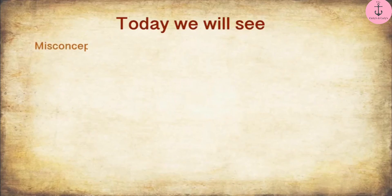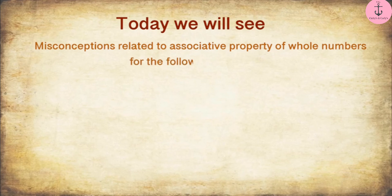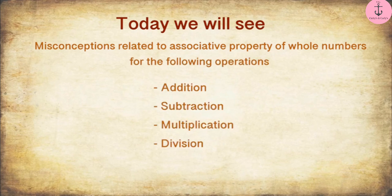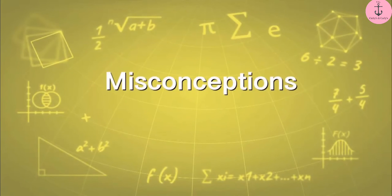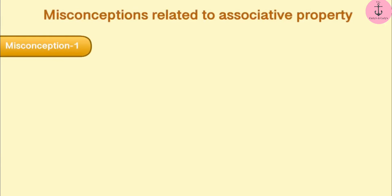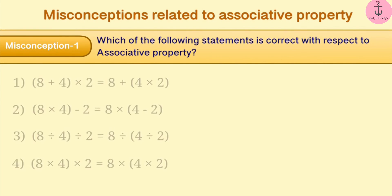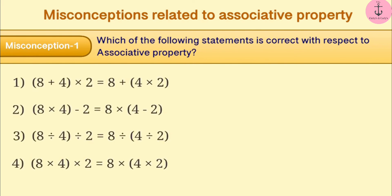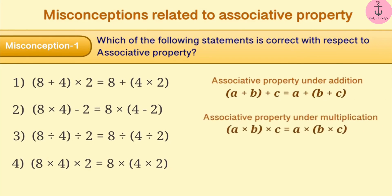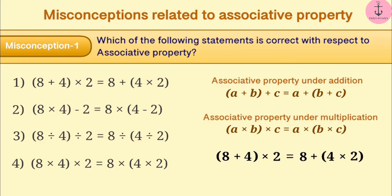Today we will see misconceptions related to associative property of whole numbers for the following operations. Misconception 1: Which of the following statements is correct with respect to associative property? We already know that whole numbers are associative under addition and multiplication. Due to difficulty in understanding, associative property is sometimes used incorrectly — for example, assuming 8 + (4 × 2) equals (8 + 4) × 2. With this misunderstanding, option 1 is incorrectly chosen.